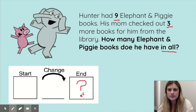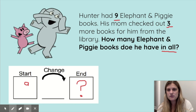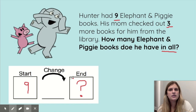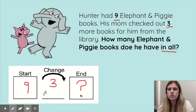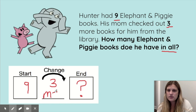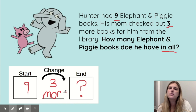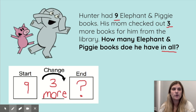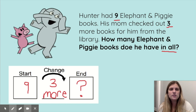I know he starts with nine — put that in the start box. What happens? He gets three more, so this is a change-to-more. This time I'm going to use this change diagram to write an equation to show how I'm going to solve this.